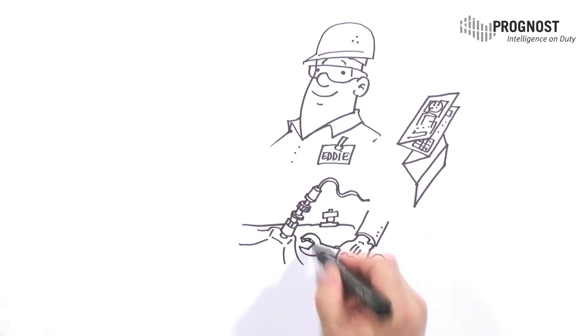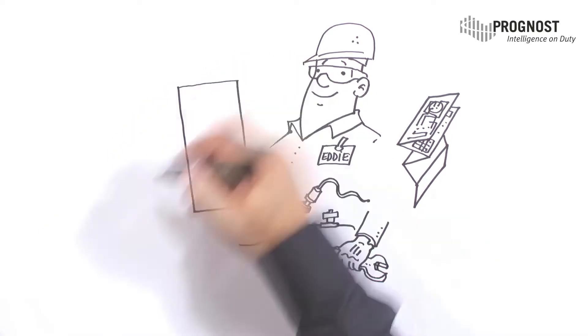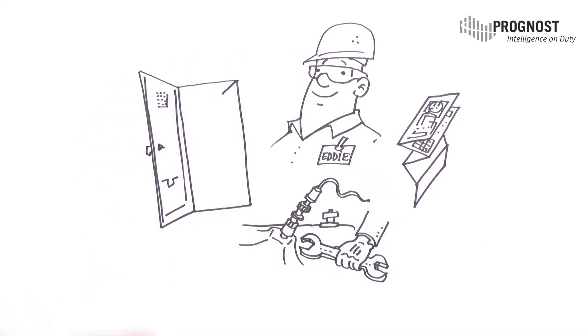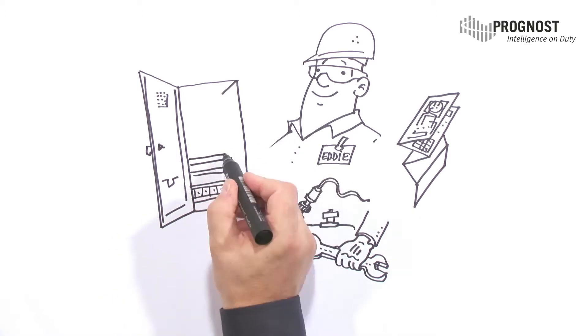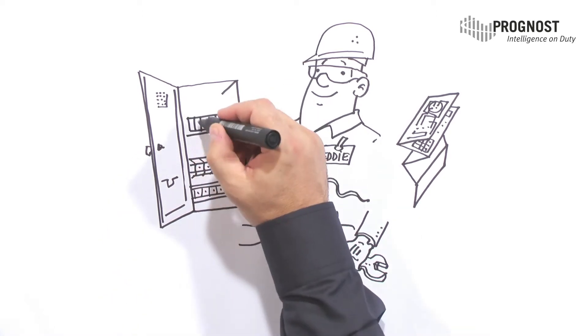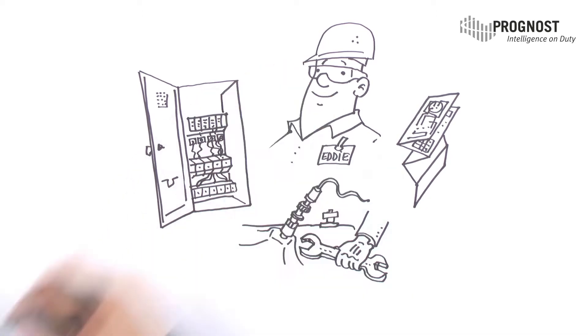Whenever instrumentation faults occur or routine checks are scheduled, Eddie grabs his equipment and tests all measuring loops that are linked to the DCS, PLC, or monitoring systems.